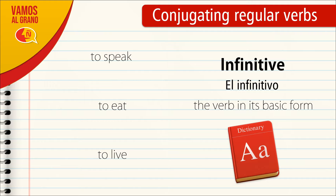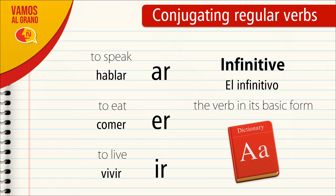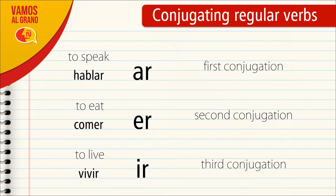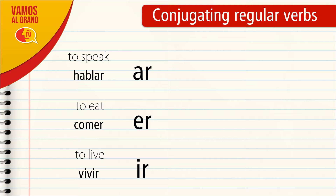In Spanish, the infinitive form of both regular and irregular verbs can have one of three possible endings: verbs ending in AR like HABLAR, verbs ending in ER like COMER, and verbs ending in IR like VIVIR. Based on these endings, Spanish verbs belong to the first conjugation if they end in AR, the second conjugation if they end in ER, or the third conjugation if they end in IR. Spanish verbs have two parts: the stem and the ending, and this applies for both regular and irregular verbs.